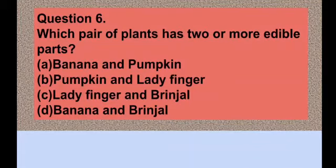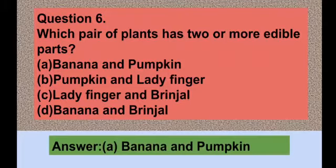Question number six: Which pair of plants has two or more edible parts? Option A banana and pumpkin, option B pumpkin and ladyfinger, option C ladyfinger and brinjal, option D banana and brinjal. The correct answer is option A — banana and pumpkin. Both banana and pumpkin have two or more edible parts.